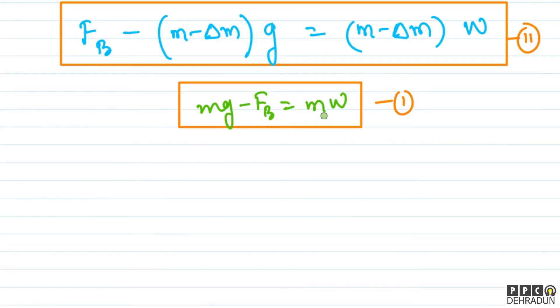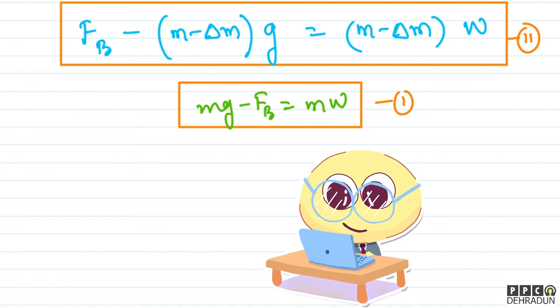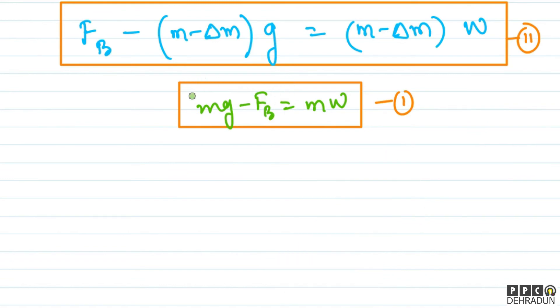So see kids, we have two equations. Now we need to solve them to finally find the value of delta M. So what can we do here? If we add both these equations, see, Fb will cancel out. So what will we get? Mg minus Mg minus minus plus delta Mg equals M into W plus M into W minus delta M into W.